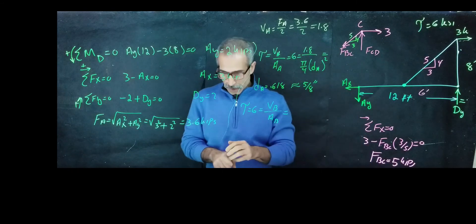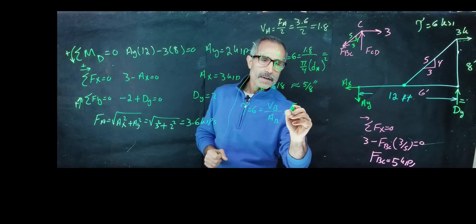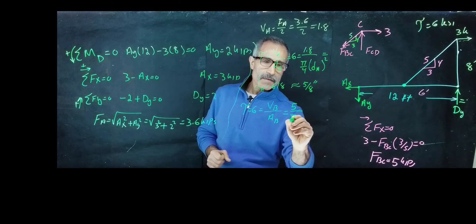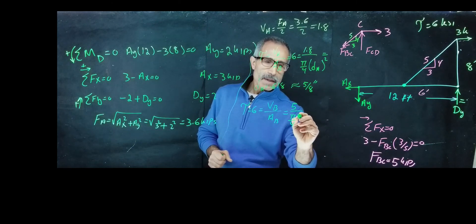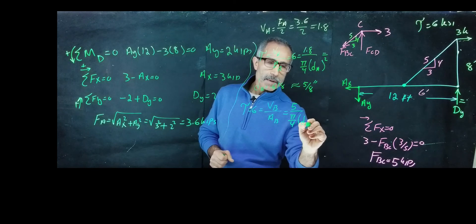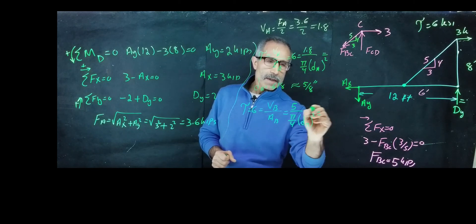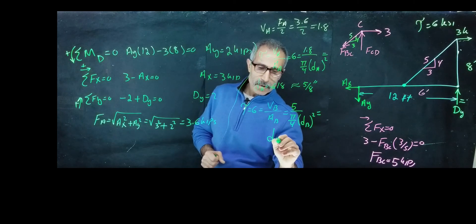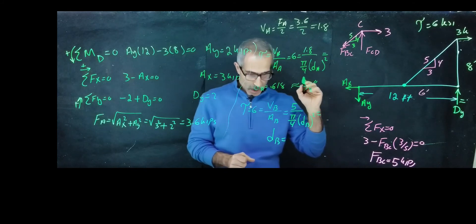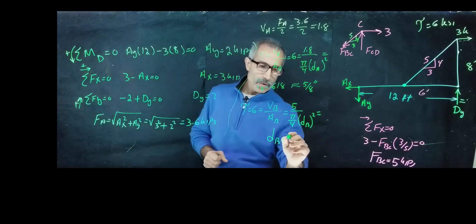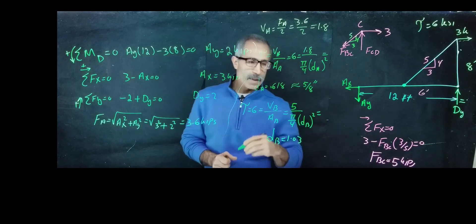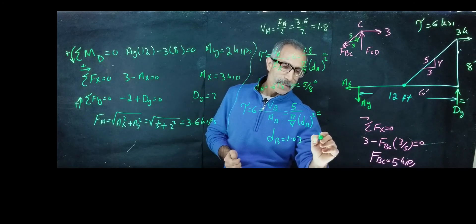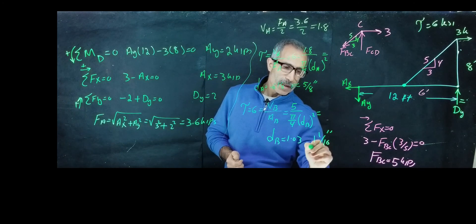Okay. Now we have 5 here divided by pi divided by 4 Db squared. And Db comes out to a little bit over 1 inch, 1.03. So you go up to the next size, use 1 or 1.16. That's what we're going to use.